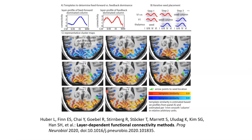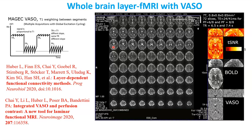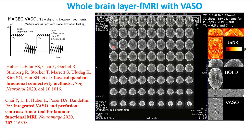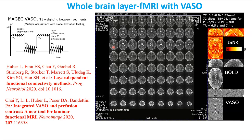Going along the cortical ribbon, you can clearly see that hump changing from one hump to two humps depending on where you pick your seed. That's a powerful technique. And of course we want to do this whole-brain.